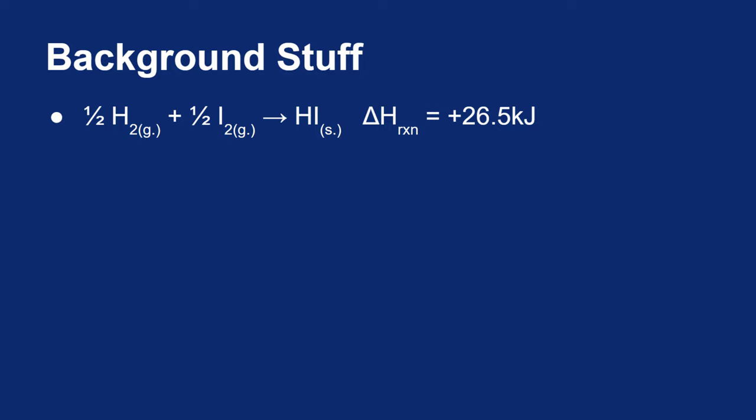We said that half a mole of hydrogen plus half a mole of iodine will make one mole of hydrogen iodide. And that the change in enthalpy for this reaction is positive 26.5 kilojoules.